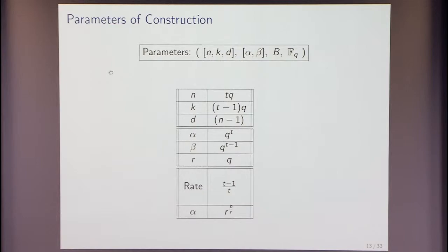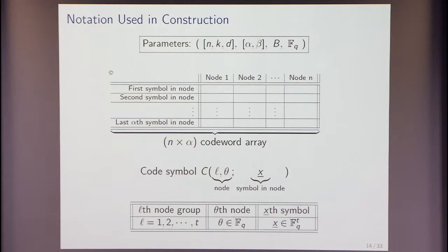So, the parameters of the particular construction are that n will be t times q. So, q is the symbol alphabet. And then, k is t minus 1 times q. d is n minus 1. So, you talk to all the other nodes for repair. Alpha is q to the t. Beta is q to the t minus 1. And r, which is n minus k, is just q. And your rate is t minus 1 upon t. And alpha, you can also write q to the t as r to the n by r. Okay? So, those are the parameters.